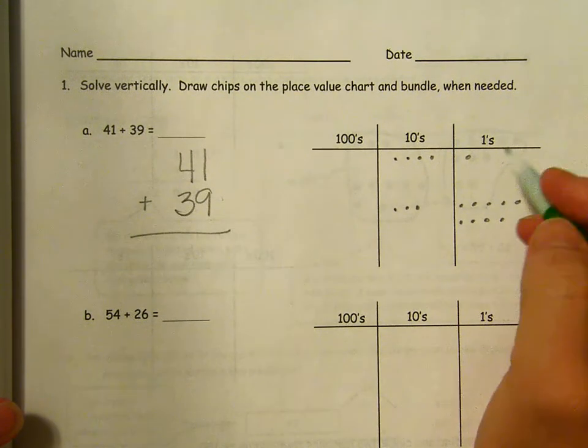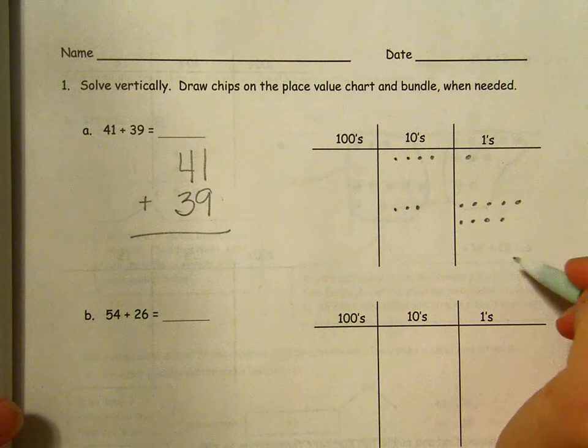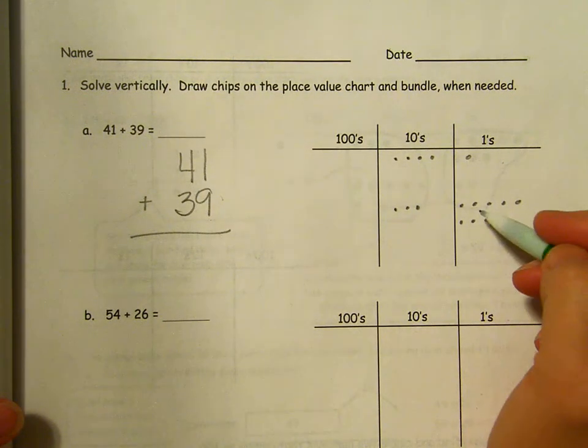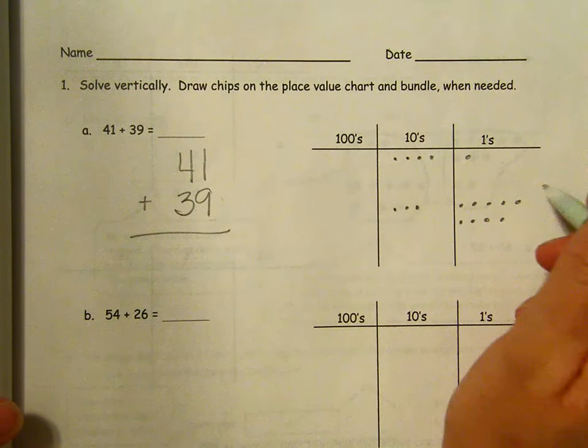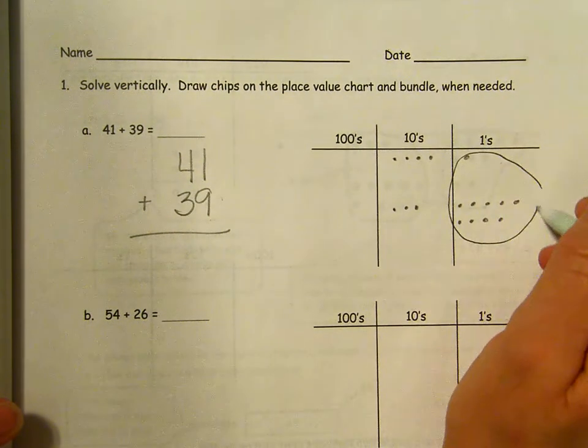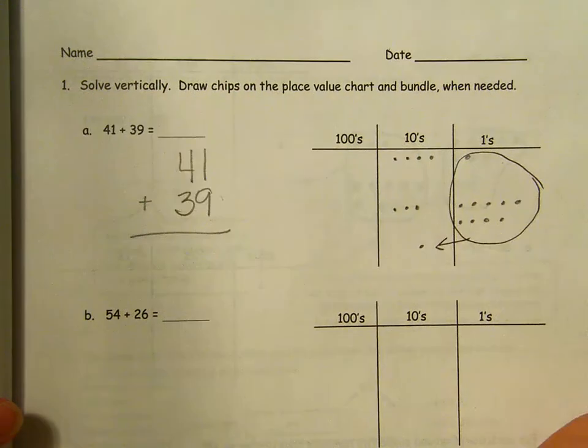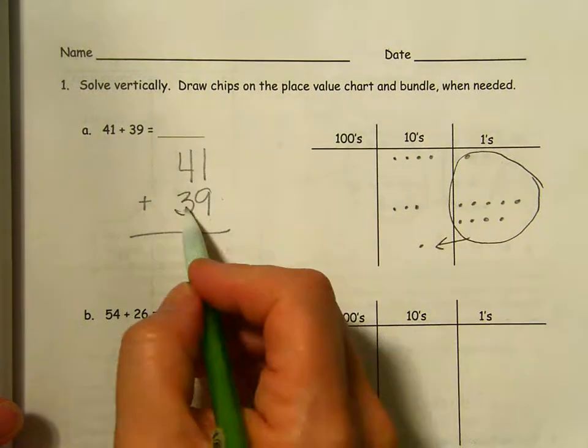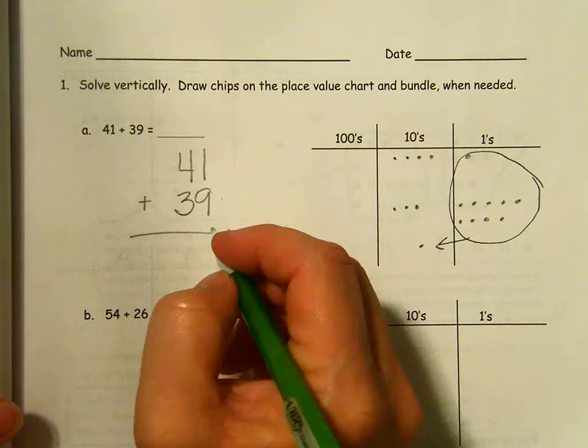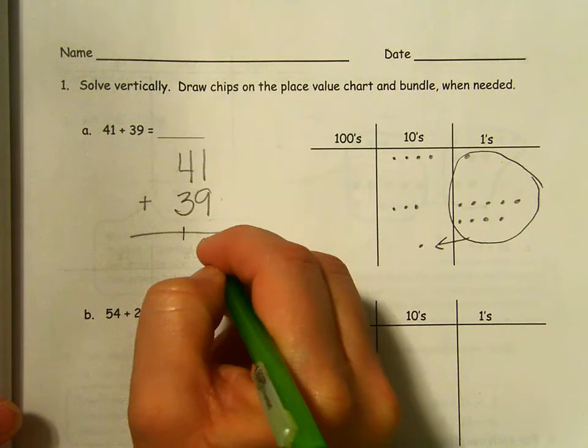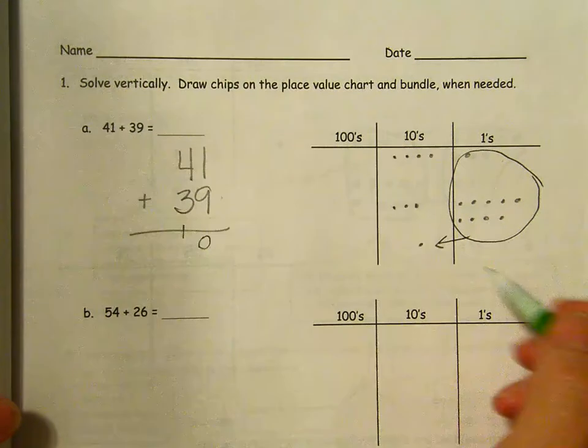Now I'm ready to add. I can start with my ones and look to see if I can bundle up or compose a 10. I have nine and one. So yes, I am going to bundle that up and make a 10. If I do it here, I have to do it here. Nine and one is 10. So I brought one 10 over there and there aren't any ones left.